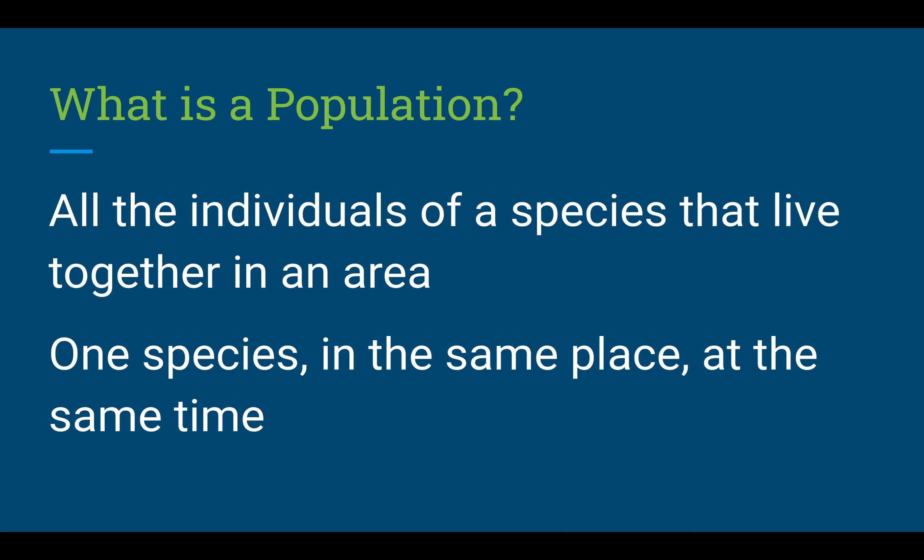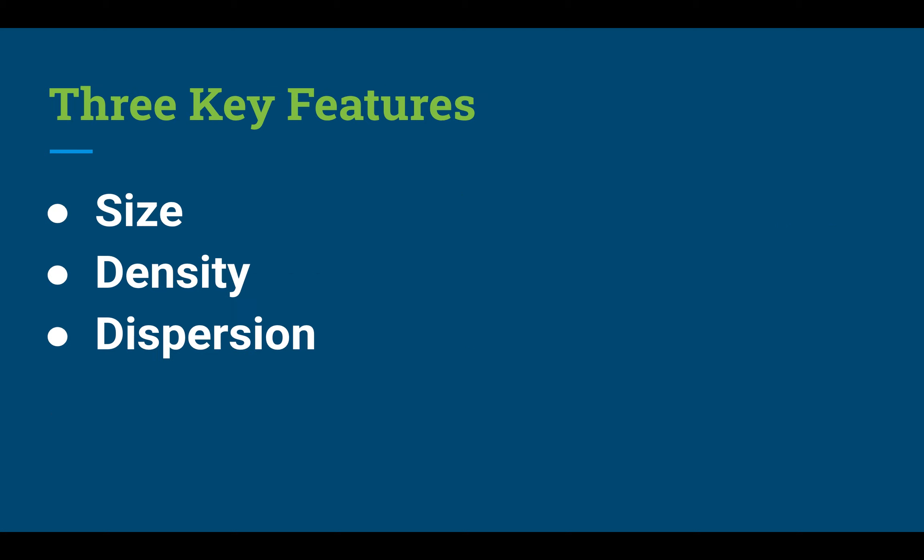You hopefully already know what a population is from our previous unit: all individuals of the same species in the same area at the same time. A group of 10 zebras or 50 flounder are both populations. Today we're going to focus on a different aspect — specifically size, density, and dispersion. These are the three key features we'll look at when studying a population.